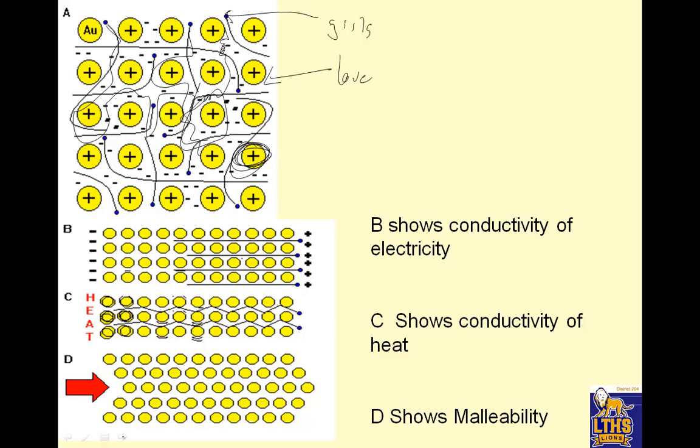Sample B shows the conductivity of electricity. If I have a huge negative charge, these electrons are going to be pushed away and attracted towards the positive. C shows conductivity of heat - heat is motion. Notice the electrons have freedom of motion. D shows malleability. If I take a hammer and smack it, notice these yellow nuclei still want to stay close together because they're surrounded by all the wonderful negative electrons.